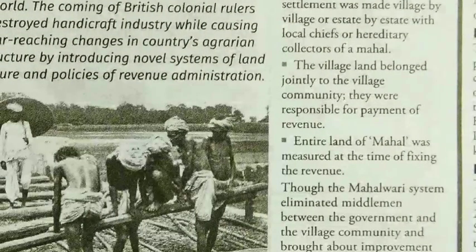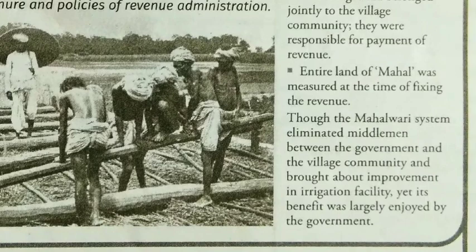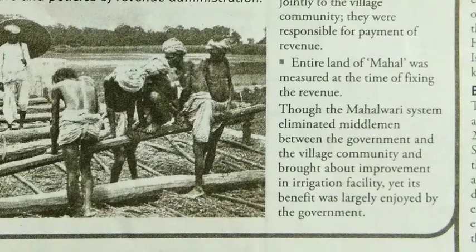The village belonged jointly to the village community, and they were responsible for payment of revenue. The entire land of the Mahal was measured at the time of fixing the revenue. The Mahalwari system eliminated middlemen between the government and the village community and brought about improvement in irrigation facilities, yet its benefit was largely enjoyed by the government.